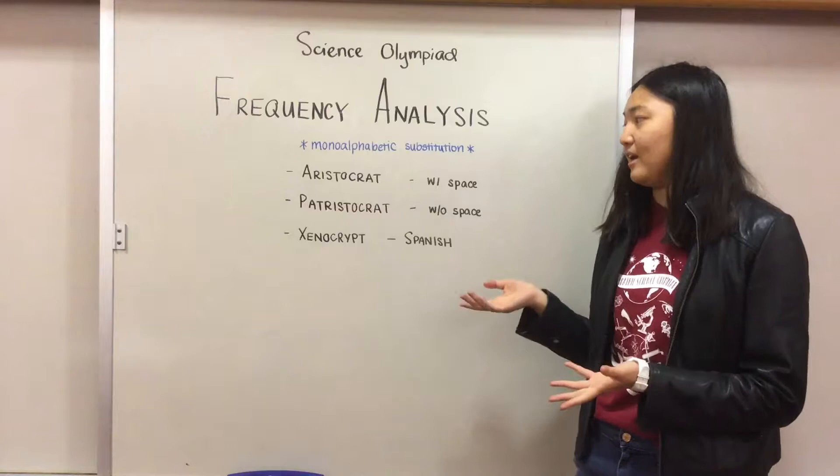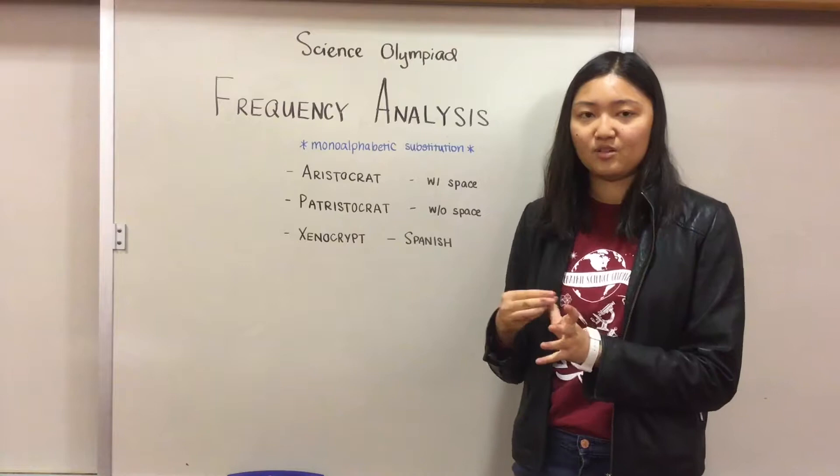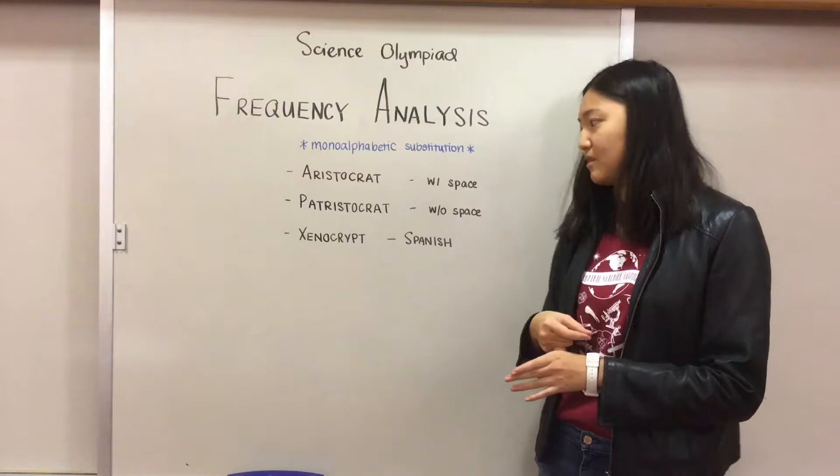Aristocrat is basically a regular sentence with space. Sometimes they might give out errors and misspellings. Patristocrat is basically an aristocrat without spacing. They will divide all the letters up into groups of five, so that'll change a little bit how we're going to decrypt them.